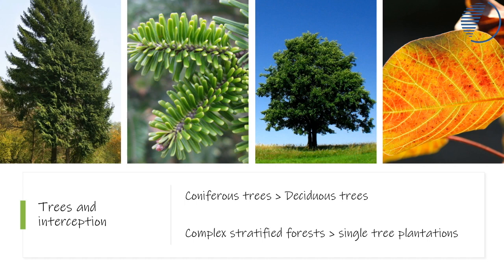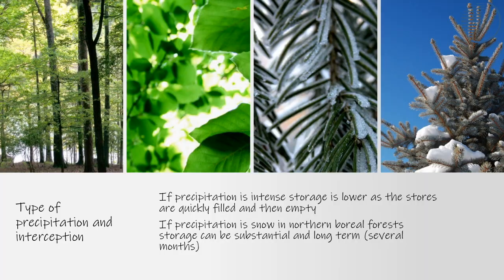By contrast, deciduous trees, which lose their leaves in autumn, will only intercept between 15% and 25% of annual precipitation. The type of tree, the density of the canopy, and the density of trees in a plantation or forest will affect how much water is intercepted. The duration and type of precipitation that falls also have an impact.